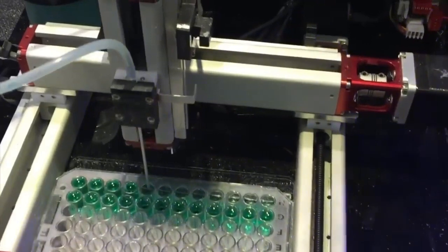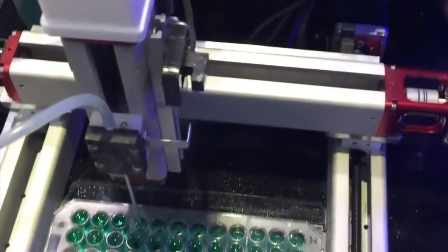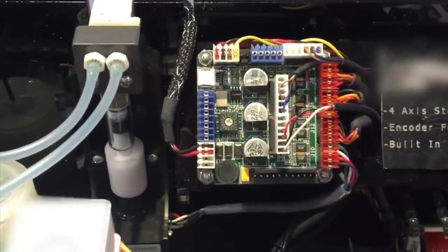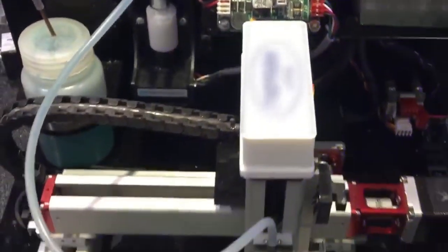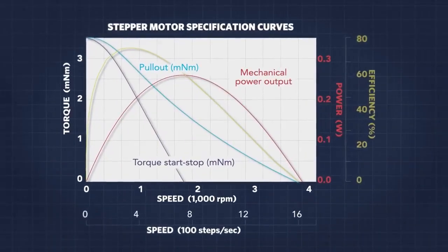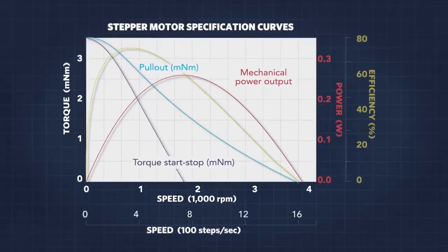Stepper motors are generally sized according to torque curves, which are typically specified by the manufacturer. A stepper motor's low-speed torque varies directly with current. How quickly the torque falls off at higher speeds depends on several factors, such as the winding inductance and drive circuitry, including the drive voltage.